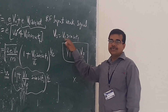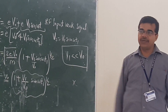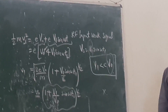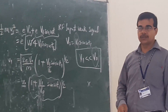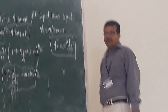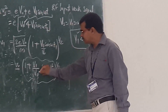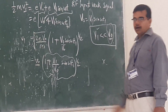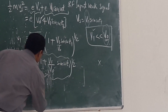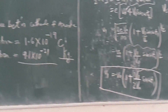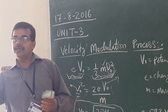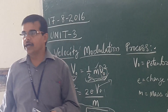Since V₀ is much greater than V₁, we can write the required velocity modulation equation. This is the velocity equation of the electron as it moves from the buncher cavity and propagates towards the catcher cavity.